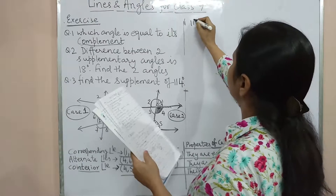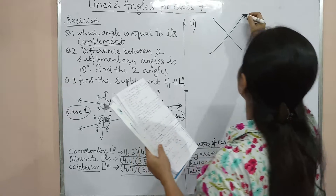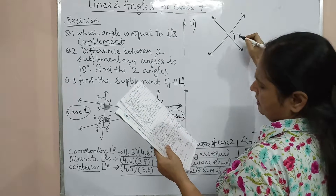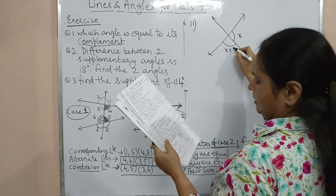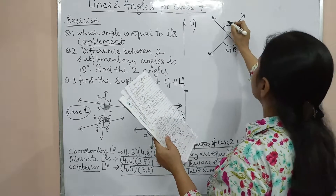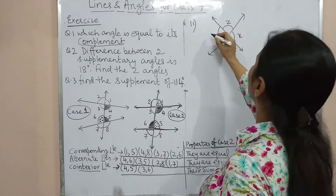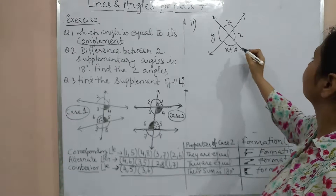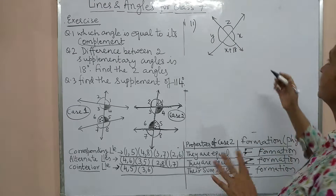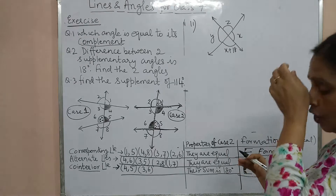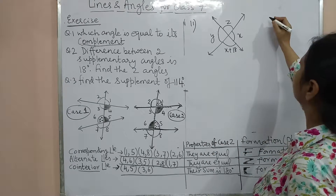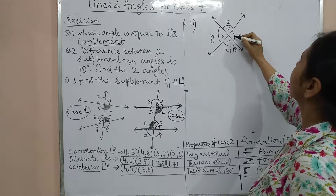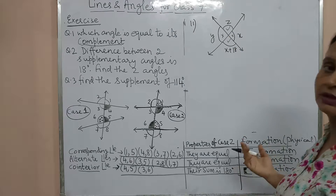Second example: two lines cutting each other, with angles X, X+18, Z, and Y. We want to find the value of each. Looking at the figure, X and X+18 are on the same straight line, so by the linear pair property: X + (X + 18) = 180 degrees.